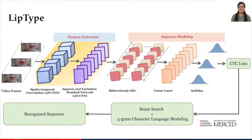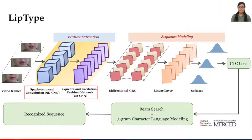We address these issues by combining a shallow 3D CNN and a deep 2D CNN integrated with squeeze and excitation blocks to capture both spatial and temporal information. This hybrid model captures the channel correlation to improve the quality of feature representations. Moreover, it is computationally lightweight. We call this optimized model LipType.